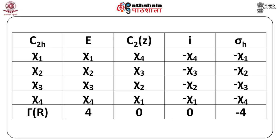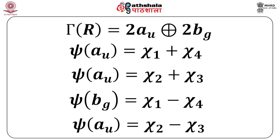When you add up the different results, the reducible representation has character 4 for E, 0 for C2, 0 for I, and −4 for σH. Applying the reduction formula gives 2 AU orbitals and 2 BG orbitals. Applying the projection operator method to the first and second rows gives ψAU = χ1 + χ4 and ψAU = χ2 + χ3. Similarly, ψBG = χ1 − χ4 and ψBG = χ2 − χ3. You can thus assign the irreducible representations to the MOs using their symmetry properties.